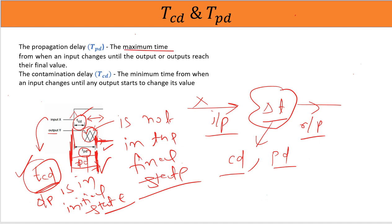So Tpd is the maximum time from an input change to the point output reaches their final value. And Tcd is the minimum time from an input change until any output starts to change.